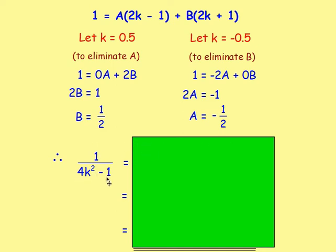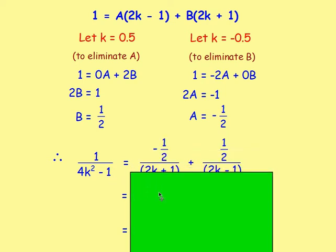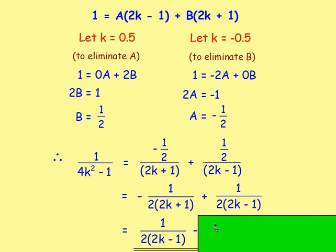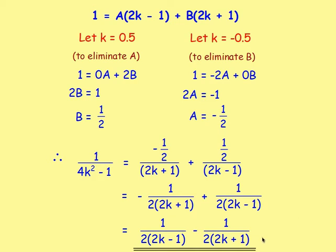So, 1 over 4k² − 1 in partial fractions is A over (2k + 1) plus B over (2k − 1), with A = −1/2 and B = 1/2. Rewriting with the positive fraction first, the answer is 1 over 2(2k − 1) minus 1 over 2(2k + 1).